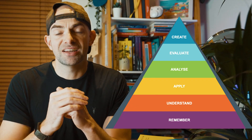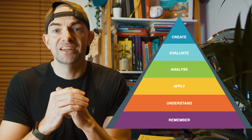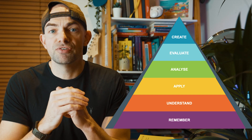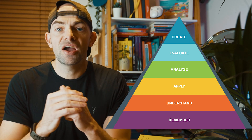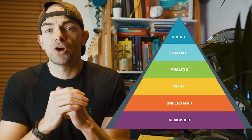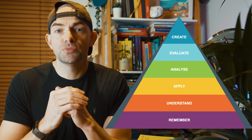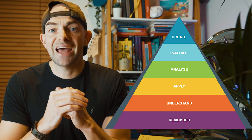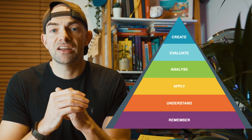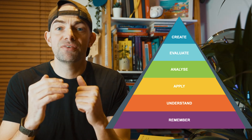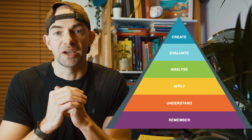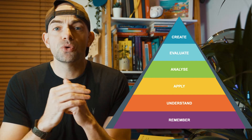The taxonomy describes six different levels of cognitive learning in the form of a hierarchy. At its most basic level it describes the essential abilities needed to recall information that's been taught, while at the highest level it describes a learner's ability to take what has been taught, analyse it and use it to create and evaluate, effectively having mastered a skill or a topic.